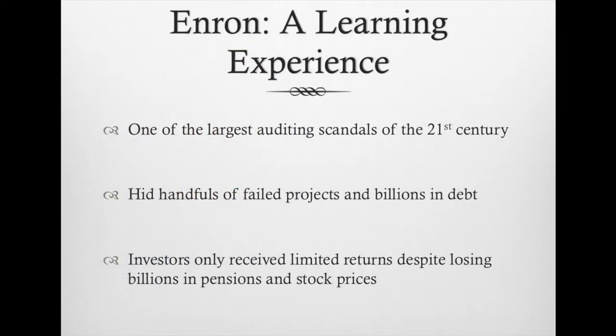Enron was one of the largest auditing scandals of the 21st century. It led to the biggest bankruptcy America had ever seen at that time. This scandal was made possible by Enron taking advantage of accounting loopholes. They hid failed projects and billions of dollars in debt. The investors filed a $40 billion lawsuit against Enron after the stock fell to $1 per share. Investors only got back limited returns despite losing billions in pensions and stock prices. This type of fraud could have been stopped if auditors had remained independent of their employers. The Sarbanes-Oxley Act placed a higher penalty on auditors who destroy key documents.